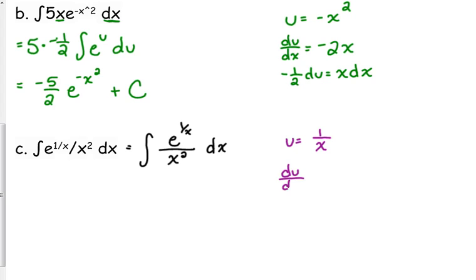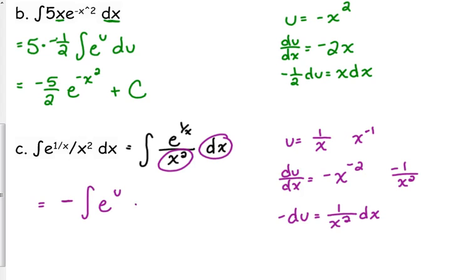The derivative of 1 over x is, if you need to rewrite it as x to the negative 1, that's fine, negative x to the negative 2. It may look like we don't have that in our problem, but remember x to the negative 2 is really, that's negative 1 over x squared. So we've got over x squared in our problem. We do need to move the negative to the other side. So we can replace the x squared in the denominator and the dx with negative du. So our integral here is equal to negative e to the 1 over x plus c.